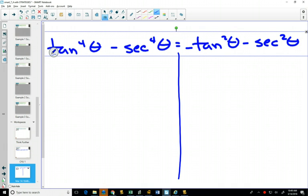If you can factor something, usually it can help you. So in this case, the left hand side, tan to the 4 minus secant to the 4 is a difference of squares. And I can factor it to be tan squared and tan squared, secant squared and secant squared, 1 plus, 1 minus.